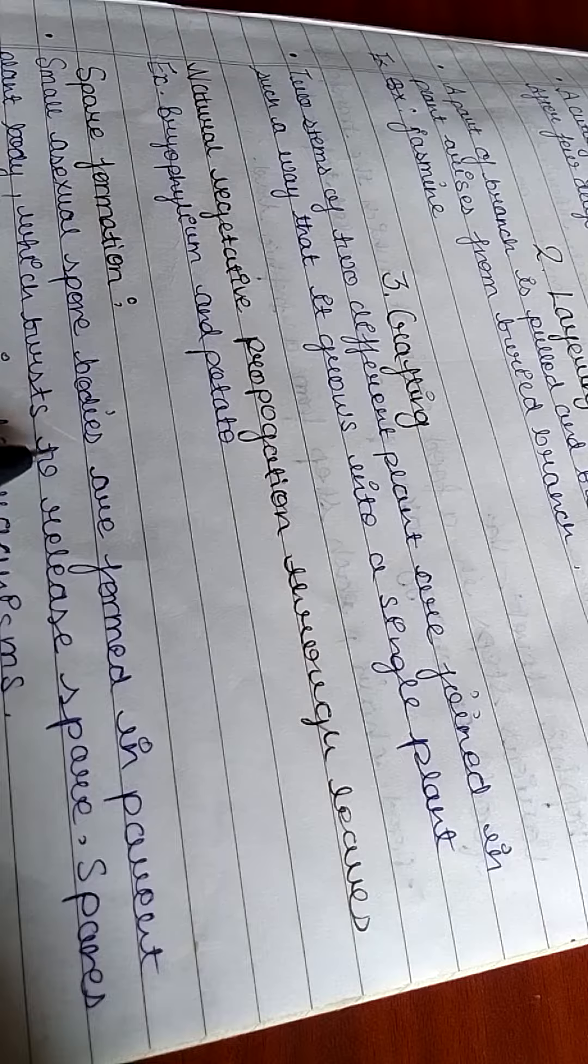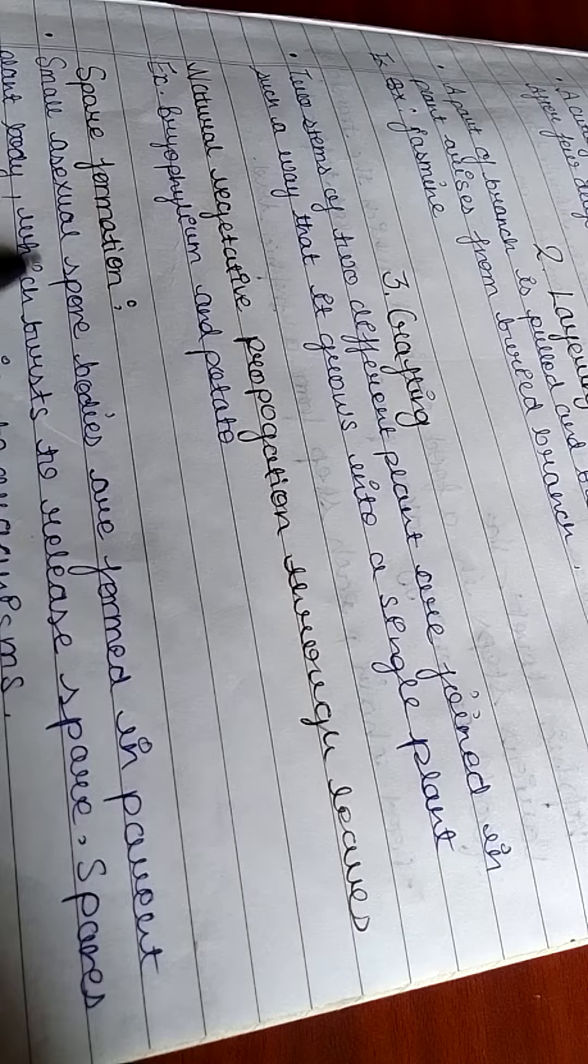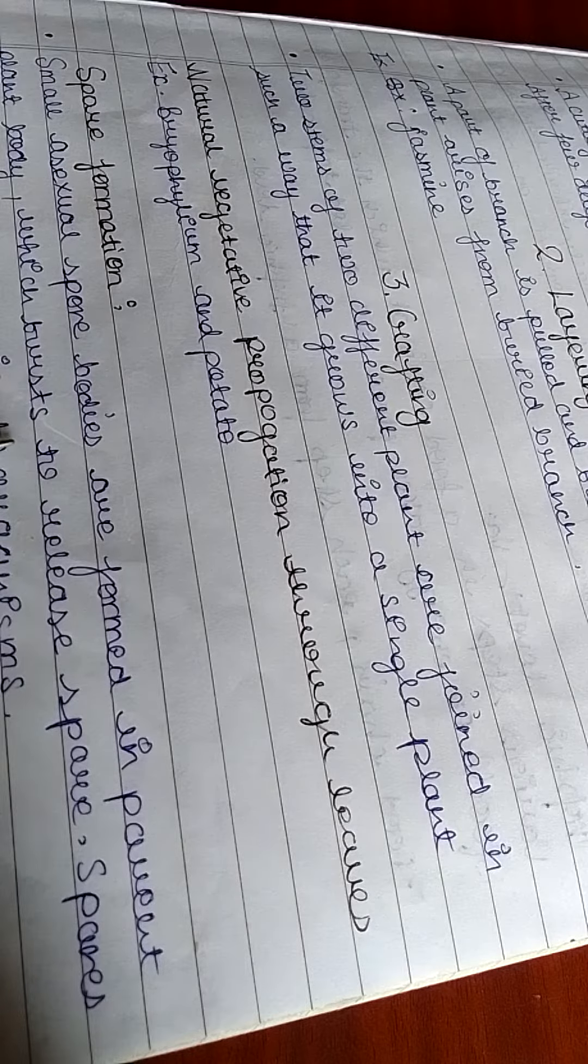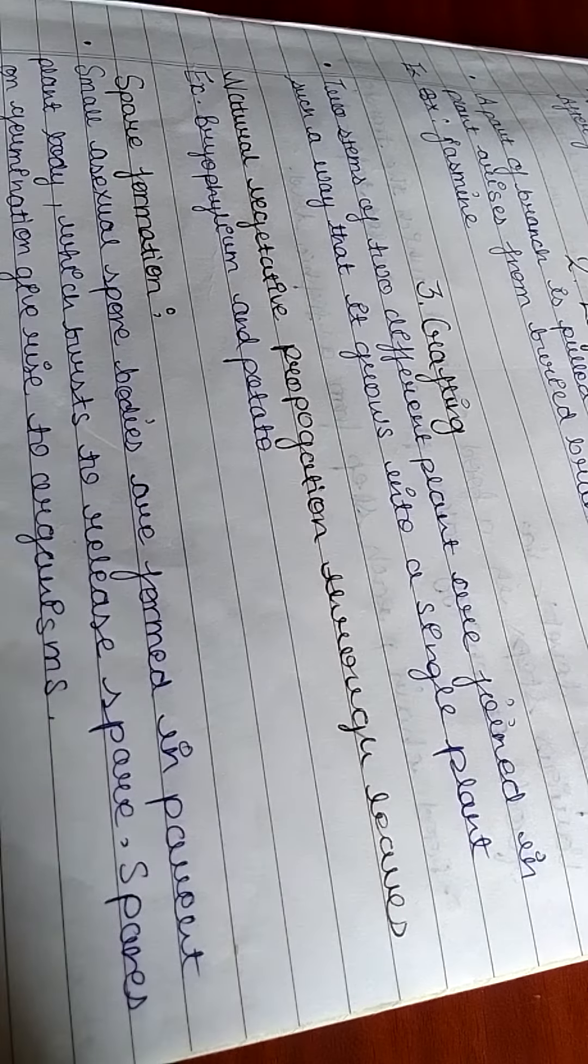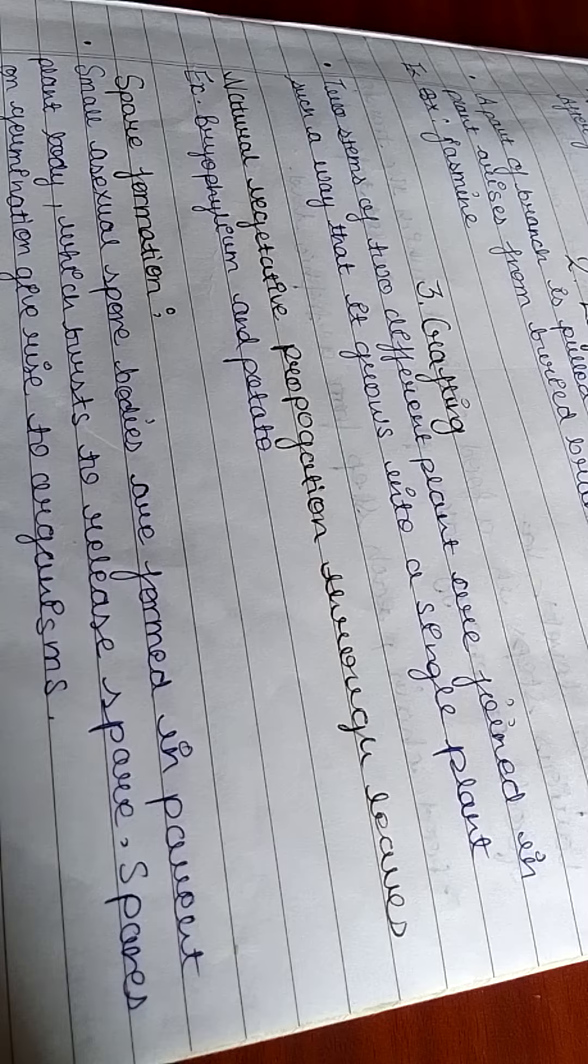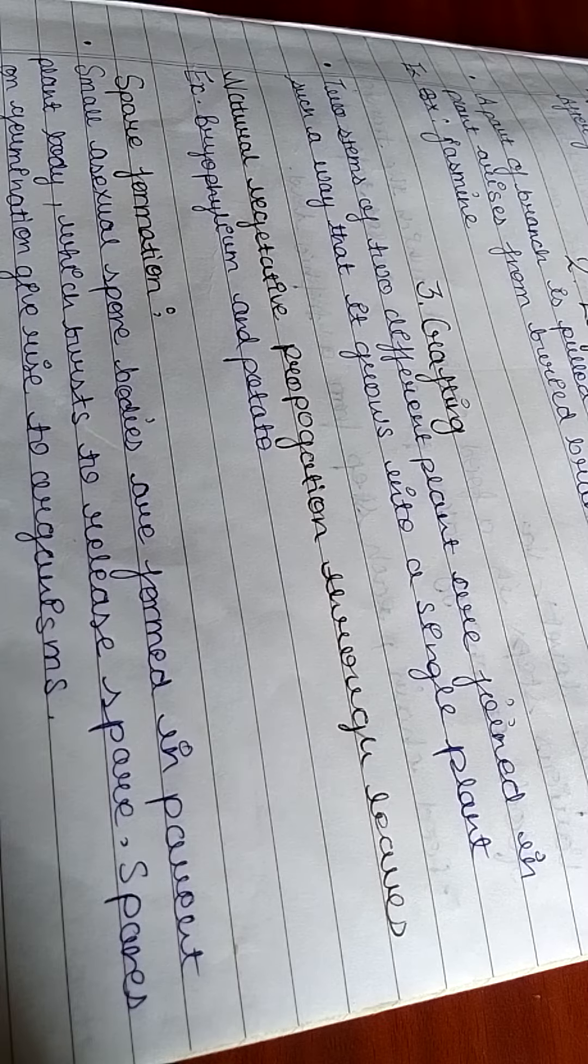Small spore bodies are formed in the parent plant body which burst to release spores. Spores on germination give rise to new organisms. Example: fungi. Thanks for watching this video.